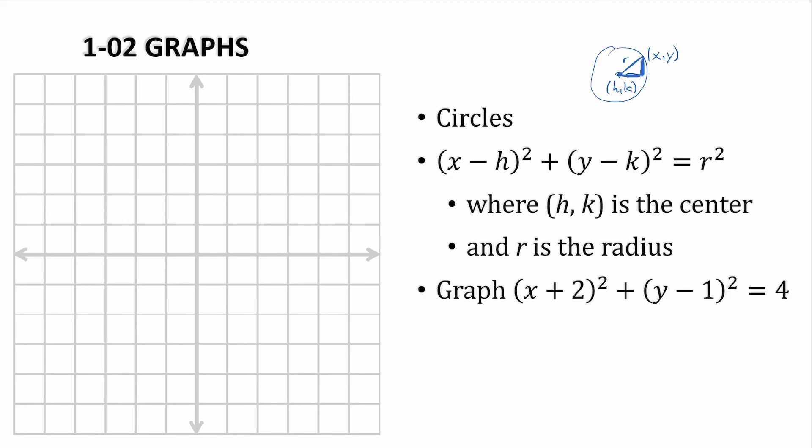So let's graph this. Alright, so if I compare, this is x minus a negative 2, and a y minus 1, therefore h is negative 2 and k is 1. Because it's always what's subtracted. The negative 2 is subtracted and the 1 is subtracted.